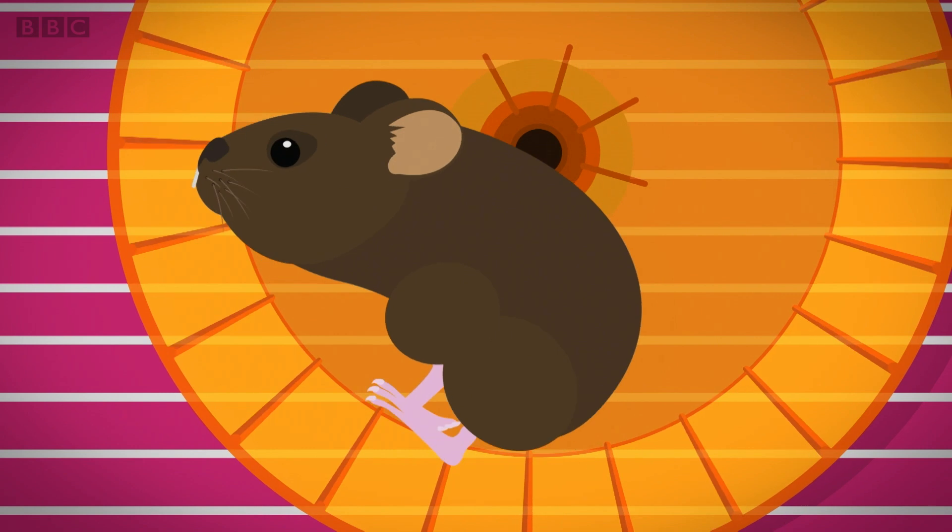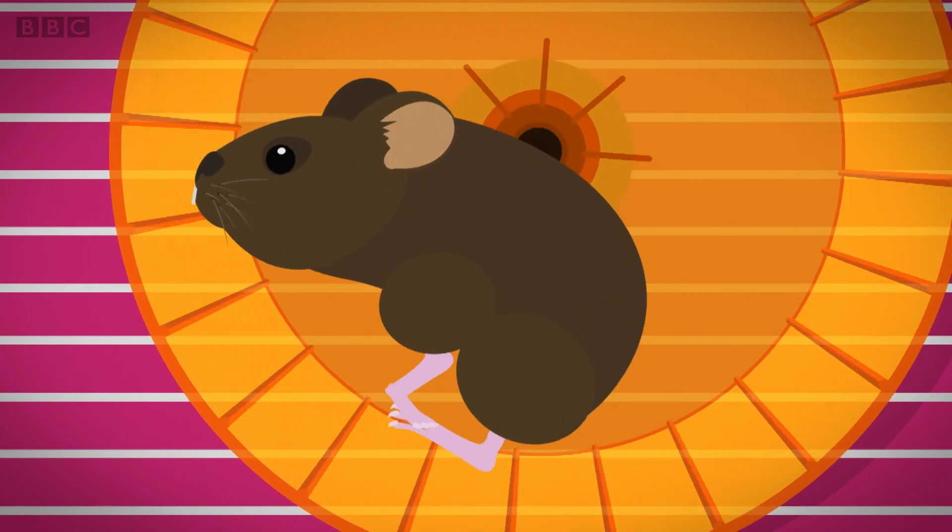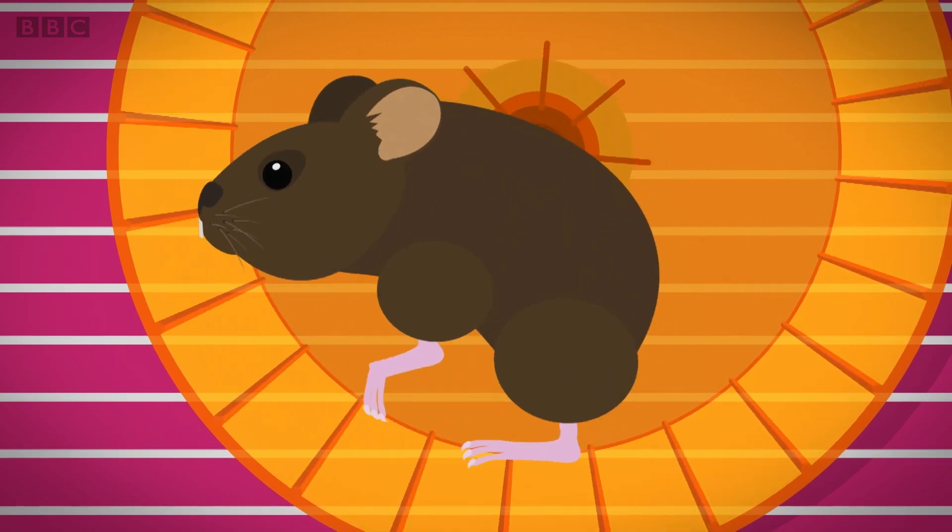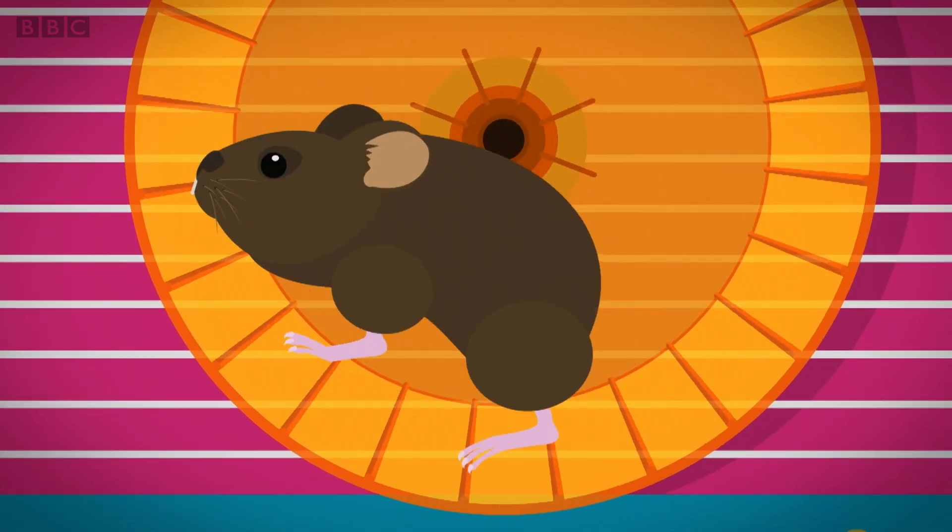Let's take a closer look to see how the wheel spins. Herbert's paws grip onto the ridges inside the hamster wheel, pushing the wheel behind him. As he runs, this makes the wheel go round and round.